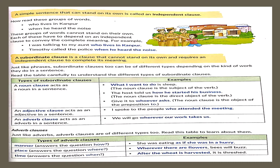Now read the next group of words: who lives in Kanpur? When he heard the noise. These groups of words, even though they have a subject and a finite verb, are not making complete sense on their own. They are dependent on something else to complete their meaning. For example: I was talking to my aunt who lives in Kanpur — the clause 'who lives in Kanpur' needs 'I was talking to my aunt,' an independent clause, to complete its meaning. This kind of clause is called a subordinate or dependent clause.